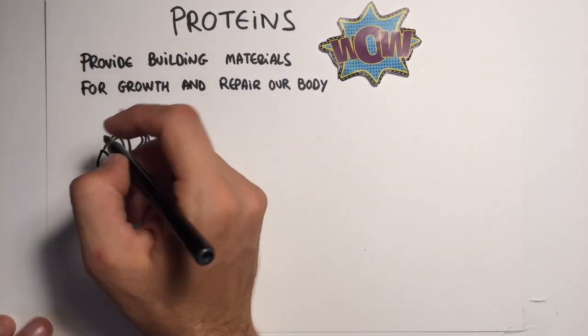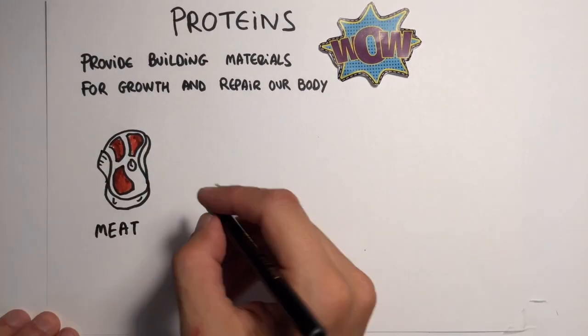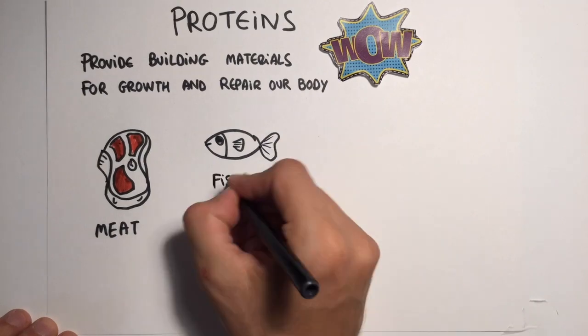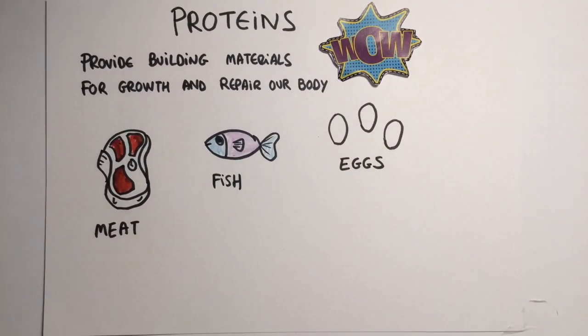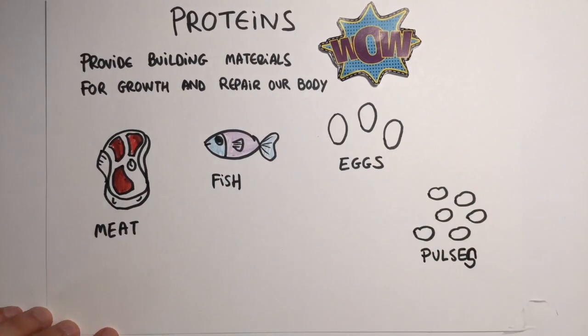Proteins are also important. They provide building materials for growth and to repair our body. They are mainly found in meat, fish, eggs, milk, and pulses.